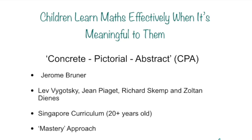Jerome Bruner alongside Lev Vygotsky, who talked about actual zone, proximal zone, and future zone — something we all need to understand, very useful about our own learning — Jean Piaget, which most people have heard of, Richard Skemp, and Zoltan Dienes. Dienes may sound familiar because that is the name given to the base 10 equipment that many people use in school, where you've got your ones and tens and hundreds, and it was developed and named after Zoltan Dienes.